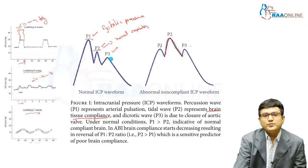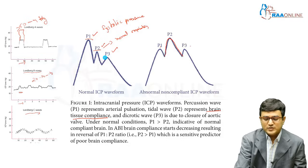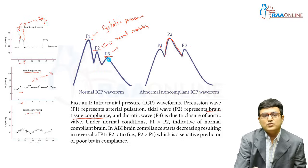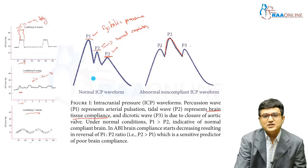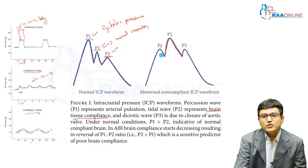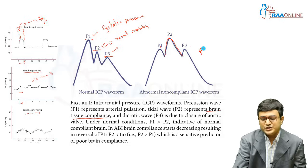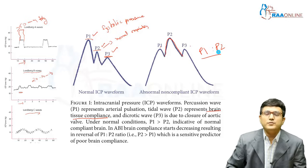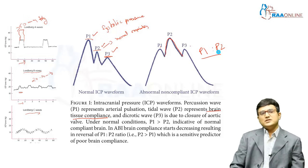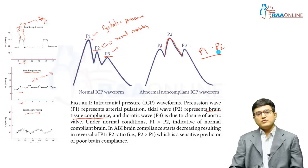P3 is the dicrotic wave corresponding to closure of the aortic valve. So the normal ICP waveform includes P1, P2, and P3 arising from those physiological events. Whenever P2 goes above P1 and P3, brain compliance is compromised — a reversed P1:P2 ratio is a very sensitive predictor of poor brain compliance. This is a basic understanding of the waveforms.